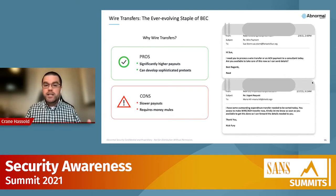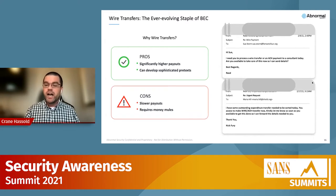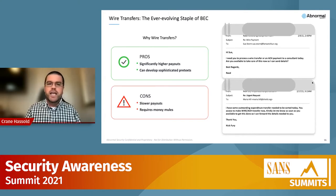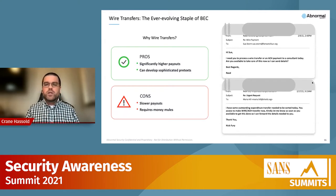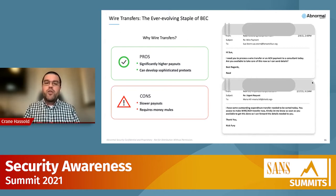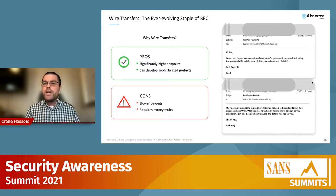From the cybercriminals' perspective, the upside of wire transfer attacks is that payouts are generally higher — the average wire transfer request is usually between $50,000 and $60,000. Depending on the type of request, it could be significantly higher. Threat actors can also develop sophisticated pretexts and convincing reasons why these payments need to be made.